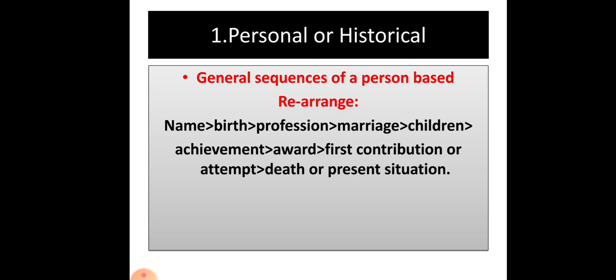And then if the famous person is no more today, so definitely there is information of his death. So you have to put lastly the death, or if he is alive, you have to mention his present condition where he has been living nowadays. So here is the sequence of a person-based, historical rearrange. Then if you just go through this kind of sequence, you will get a full right order story.